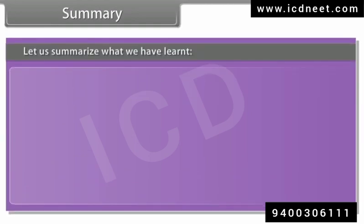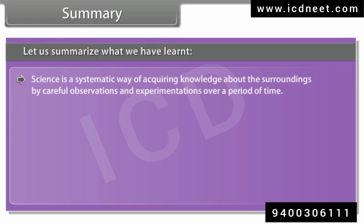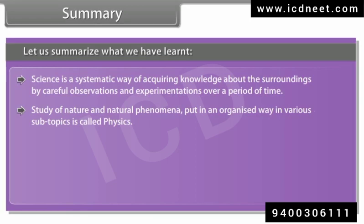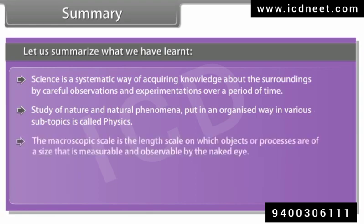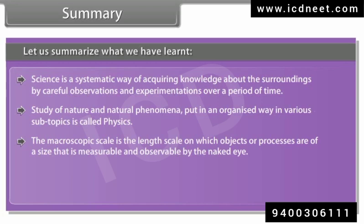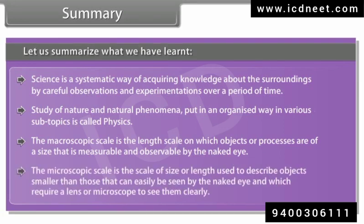Summary: science is a systematic way of acquiring knowledge about the surroundings by careful observations and experimentations over a period of time. The study of nature and natural phenomena put in an organized way in various subtopics is called physics. The macroscopic scale is the length scale on which objects or processes are of a size that is measurable and observable by the naked eye. The microscopic scale is the scale of size or length used to describe objects smaller than those that can easily be seen by the naked eye, and which require a lens or microscope to see them clearly.